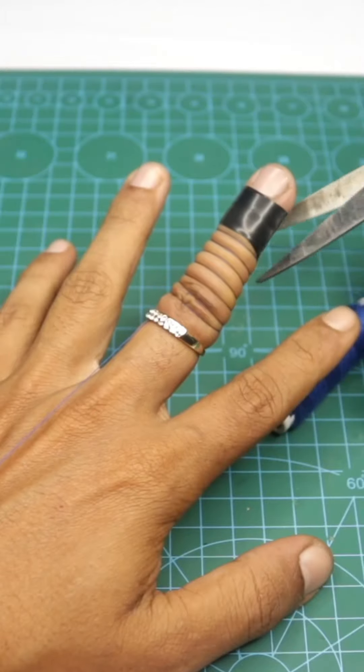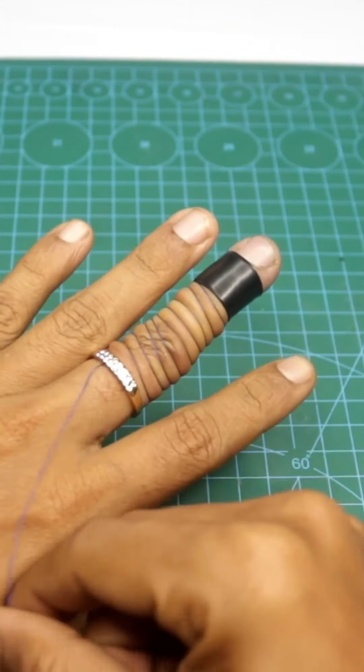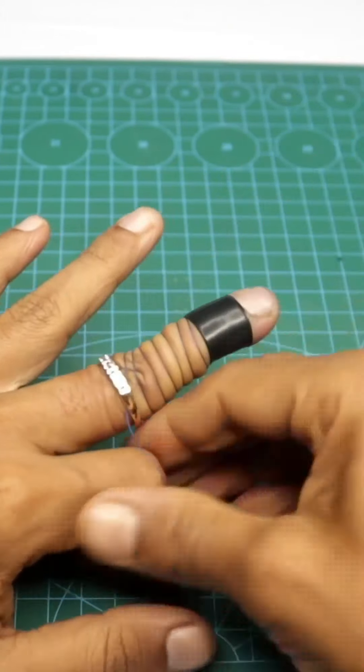Now, turn the end of the thread in the opposite direction and you will see how the ring slides out without problems.